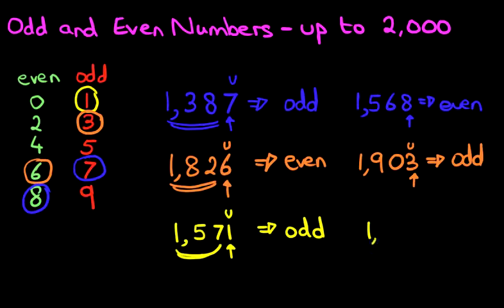Right. And lastly, we have 1,820. Now is this an odd number or an even number? Have you done it? Great. Let's work through it.